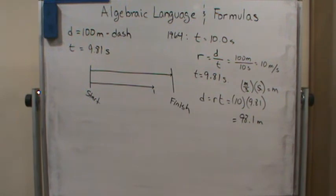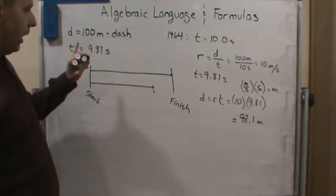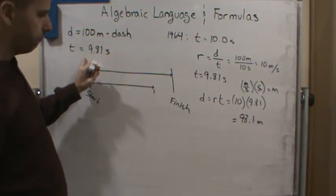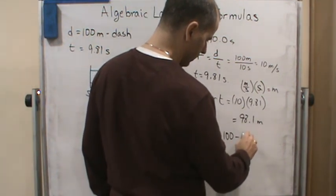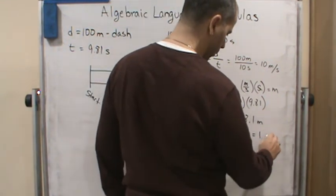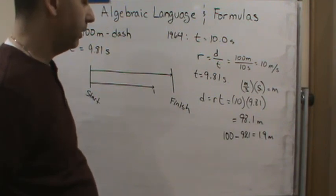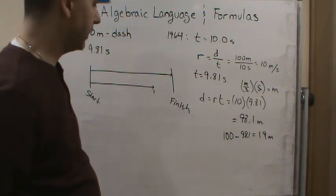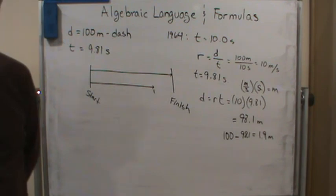Okay, so now, the question, we didn't answer the question yet. The question is, how far behind in meters was he? Well, if this is how far he was when Mr. Bolt crossed the finish line, then how far back was he? You have to take the 100 meters minus 98.1, which gives you 1.9 meters. So that's the answer. Mr. Hayes was 1.9 meters behind Mr. Bolt. Have a great day.